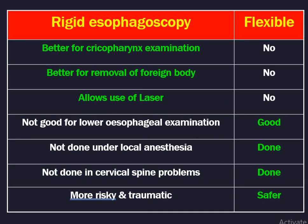Differences between rigid and flexible esophagoscopy: Rigid esophagoscopy is better for cricopharyngeal examination; flexible is not. Rigid is better for foreign body removal; flexible is useful but cannot remove all foreign bodies. Rigid can be used with laser; flexible cannot. Rigid is not good for lower esophageal examination; flexible is. Rigid is not done under local anesthesia and is more painful; flexible is done under local anesthesia. Rigid is not used in cervical spinal problems; flexible is performed. Rigid is more risky and traumatic than flexible.